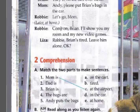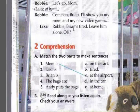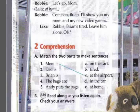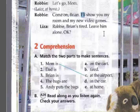Let's go, mom. Cuando llegan a la casa, Robbie dice: come on, Brian. I'll show you my room and my new video games. I'll — este I'll es el futuro, I will, y la contracción es I'll show you — te mostraré. Robbie, Brian's tired — Brian está cansado. Leave him alone — déjalo a él, him, alone, solo — déjalo tranquilo. Leave him alone. Leave me alone — déjame tranquilo.